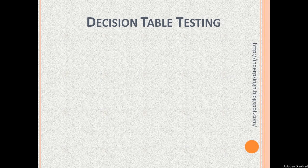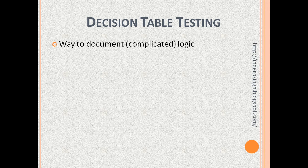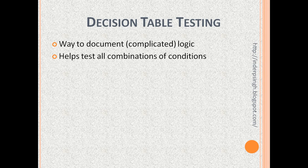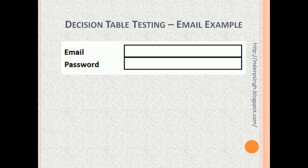What is a Decision Table? Well, it is a way to document logic, especially complicated logic, so we don't miss any combination of the different input conditions. It also helps us in testing all combinations of the possible conditions. A Decision Table contains two parts: the conditions with the different values we can give, and then there are the corresponding actions. So let us see an example of a Decision Table.